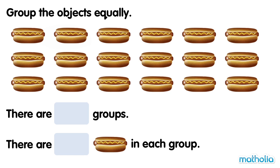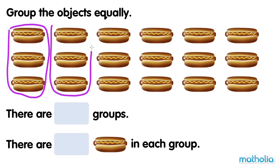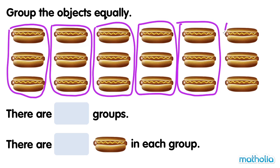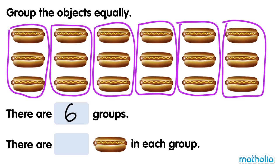Group the objects equally. There are 18 hot dogs. Let's make groups of 3. 1, 2, 3, 4, 5, 6. There are 6 groups. There are 3 hot dogs in each group.